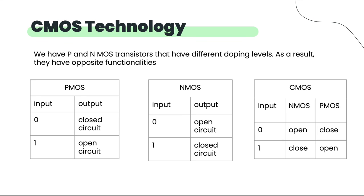MOSFETs have two different types of doping concentrations: NMOS and PMOS, which have completely flipped functionalities — which is why we generally use them together. This is CMOS technology — a combination of both P and NMOS. When you apply voltage to a PMOS, it generates an open circuit; when you apply voltage to an NMOS, it generates a closed circuit. When you don't apply voltage to a PMOS, it acts like a wire.